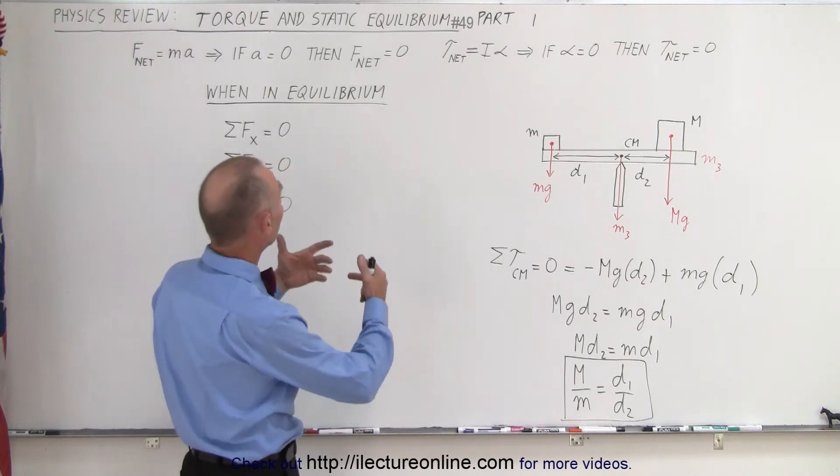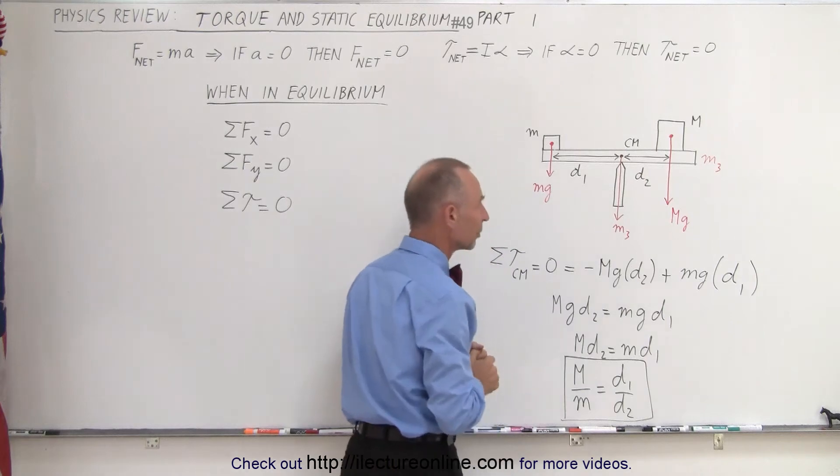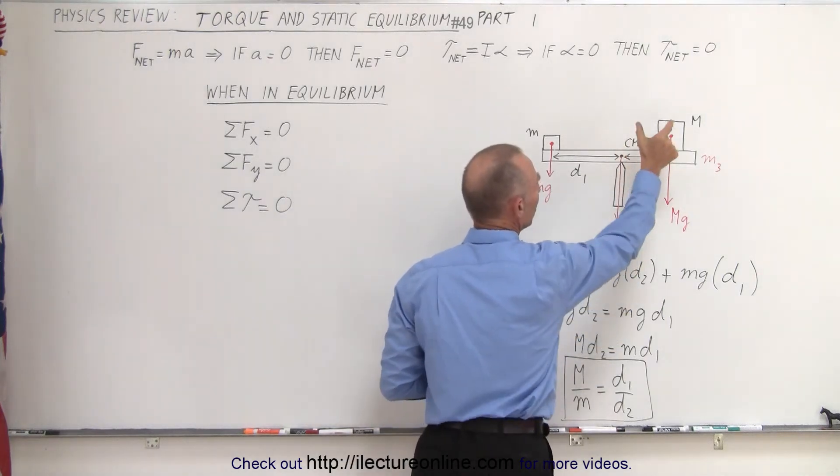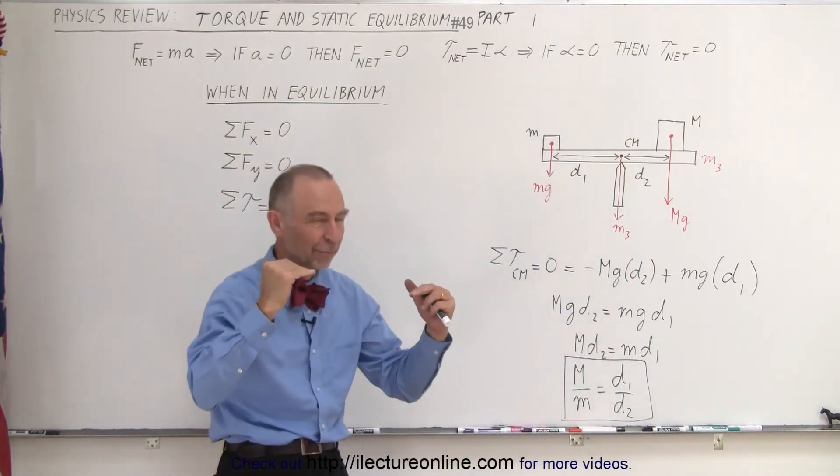And so now we have what we call static equilibrium, and so let's say we have an object right here which is at static equilibrium. Let's say that the object is supported at its center of mass, we place a big mass on one side, a small mass on the other side, and now everything is balanced out.